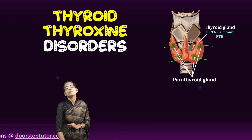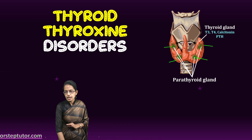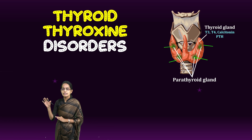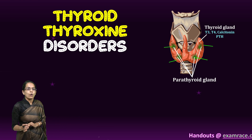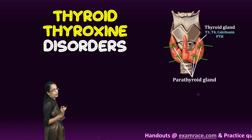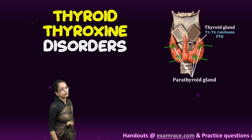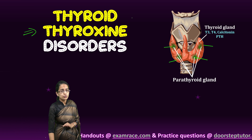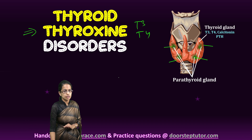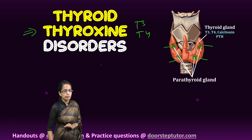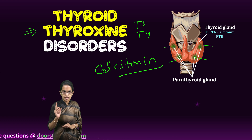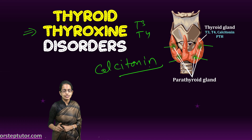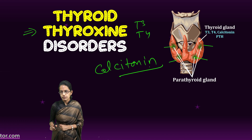The thyroid has two important secretions. The first is thyroxine — the well-known T3 and T4 secretion. The second is calcitonin. These two secretions — thyroxine and calcitonin — are very important.